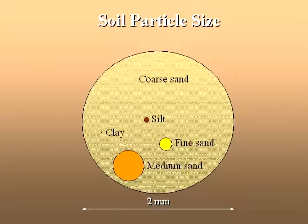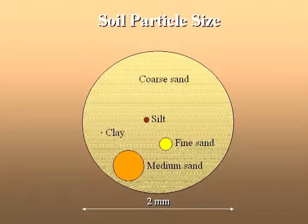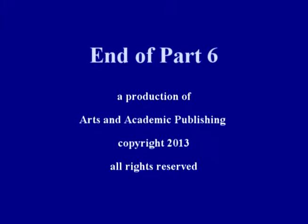Clays are also interesting for several other reasons in addition to just their tiny size. They tend to have a rather different kind of mineralogy than silts, and the details of their chemical composition make them important components of soils because of the kinds of things that they can do. Groups of clays include things like kaolinites, montmorillonites, and illites. We will discuss all this stuff in greater detail in our next show. Thank you.